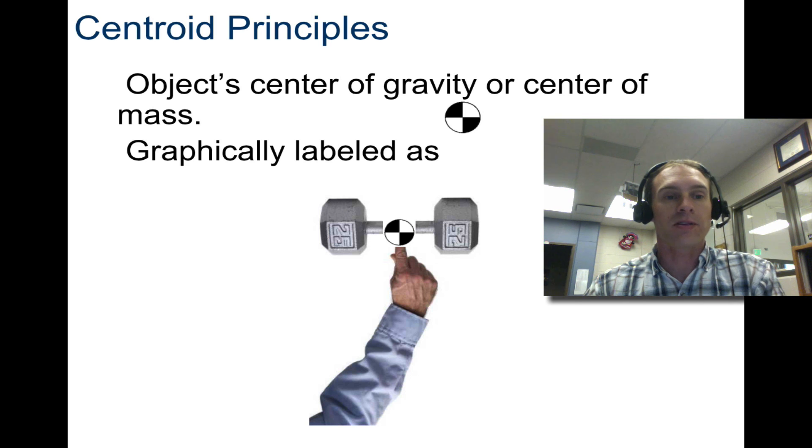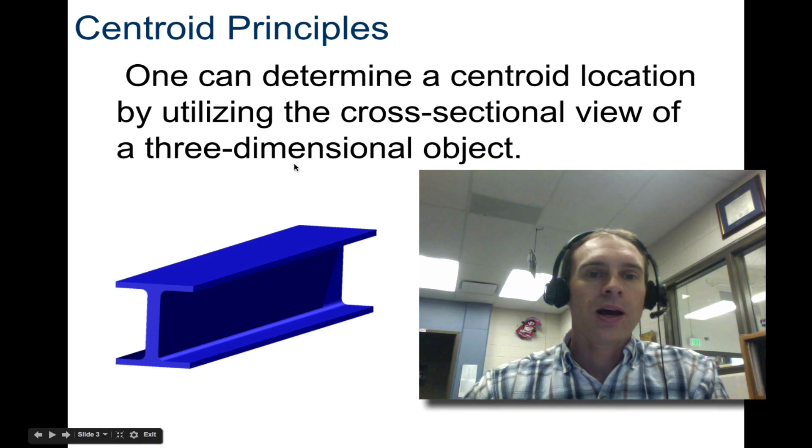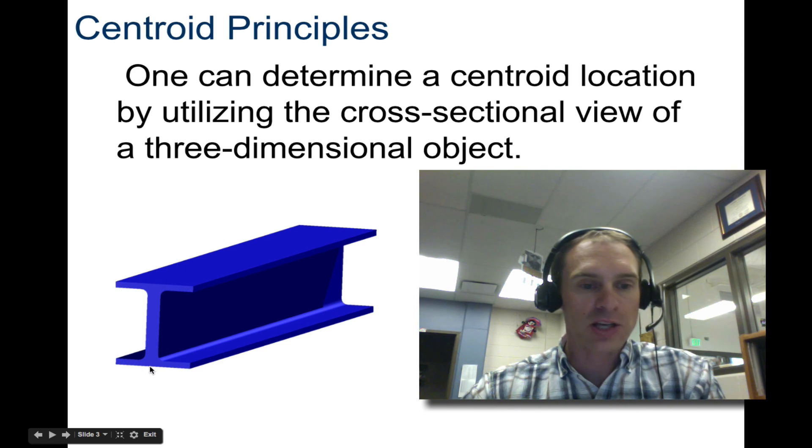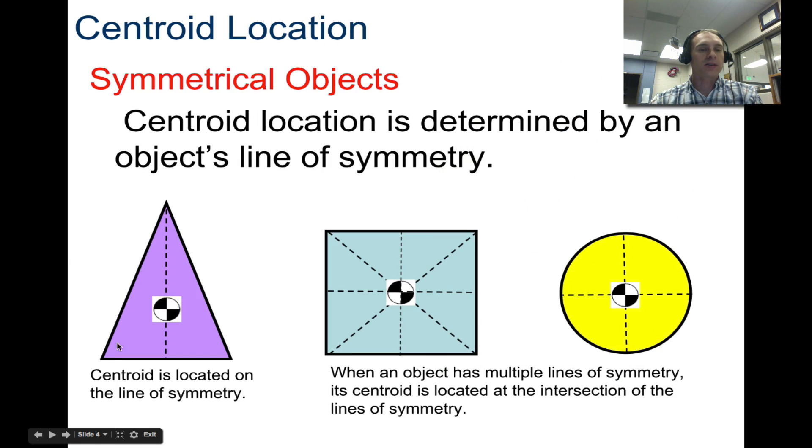The object's center of gravity, or center of mass, is usually graphically labeled with this symbol. You can determine the center location by utilizing a cross-sectional view. This I-shape is a cross-section of this I-beam. Here is a triangular shape. If this were a triangular beam coming out, that's a cross-section of it.